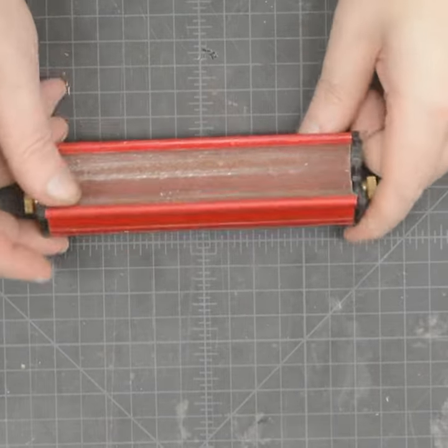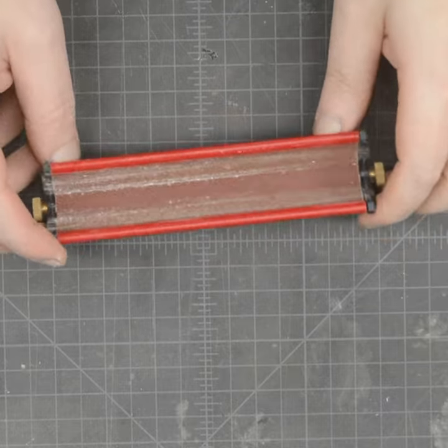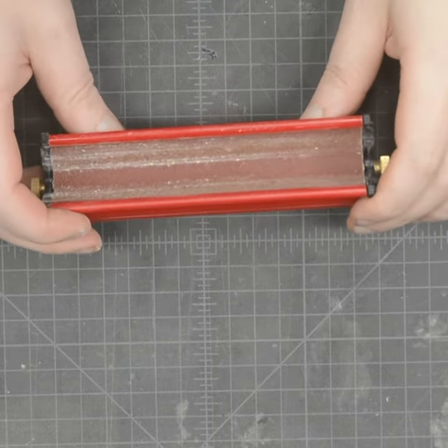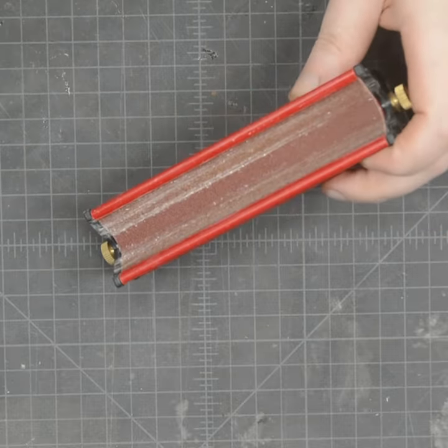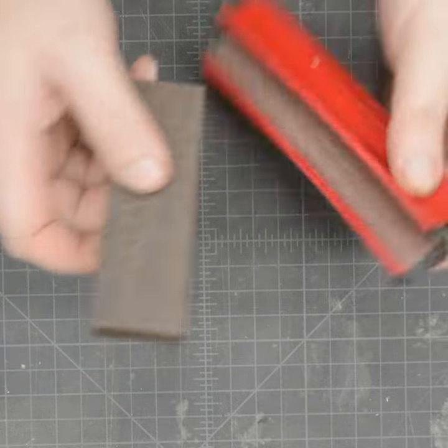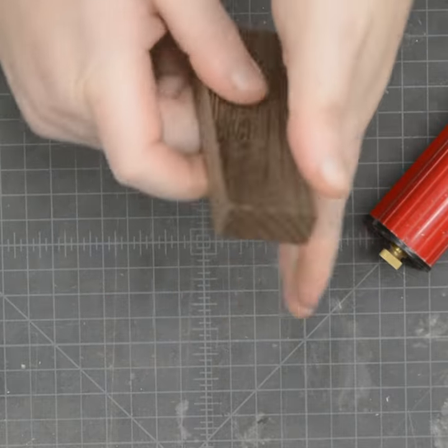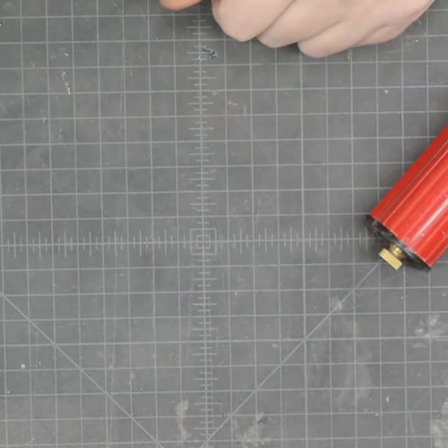Cool tools sanding edition. This is the FastCap dual edge sander. It is amazing for breaking down the edges on sheet goods or on things like one by twos, one by threes. It slides right there, breaks off that edge, makes it nice and smooth so you don't cut yourself on it.